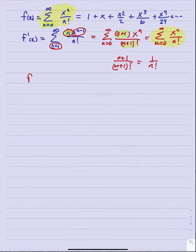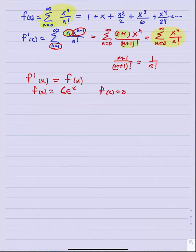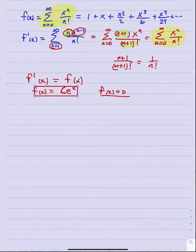In other words, when we took the derivative of this function f, we got the same function back. And we know the only function that generally does that is f of x equals c·e to the x. When c is not zero, the only function that is its own derivative is the basic exponential function.